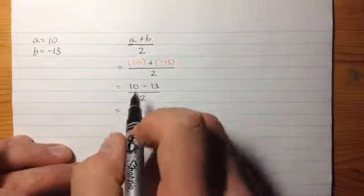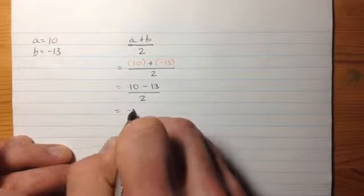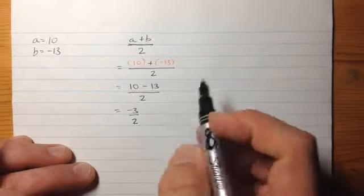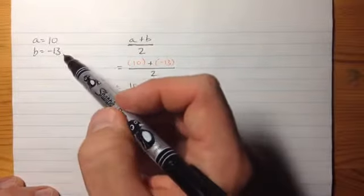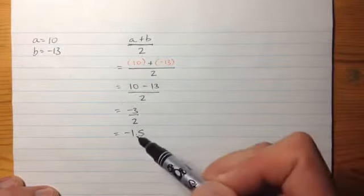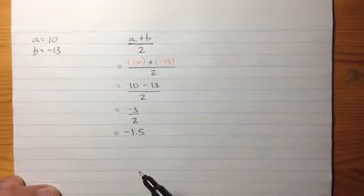And then this final value, this is going to be negative 3 on the top and 2 on the bottom. That could also be written as negative 1.5. So the average of 10 and negative 13 is negative 1.5. That's the value halfway between them.